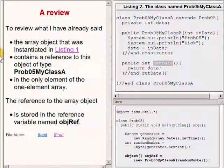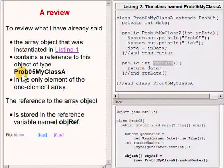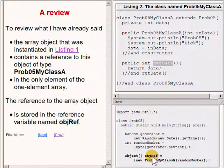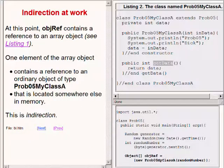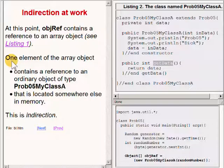To recap what I have already told you, the array object that is instantiated on the bottom right of your screen contains a reference to an object of type prob05myClassA. That reference is stored in the only element of a one-element array. The reference to the array object is then stored in the reference variable named objref. At this point, objref on the bottom right of your screen contains a reference to an array object. The one element in the array object contains a reference to an ordinary object of type prob05myClassA.